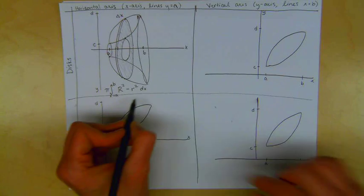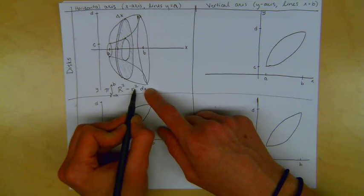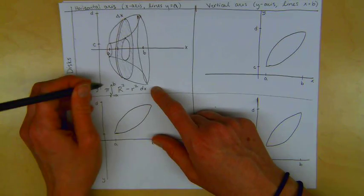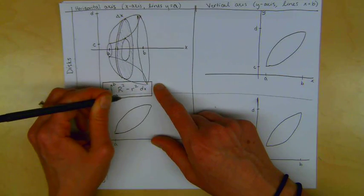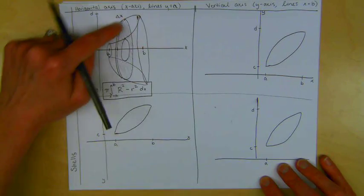The final thing I should note is because this is a dx, it means that my curves here should also be written with respect to x. I shouldn't have a y variable anywhere in this integral. So that's about the horizontal axis using disks.